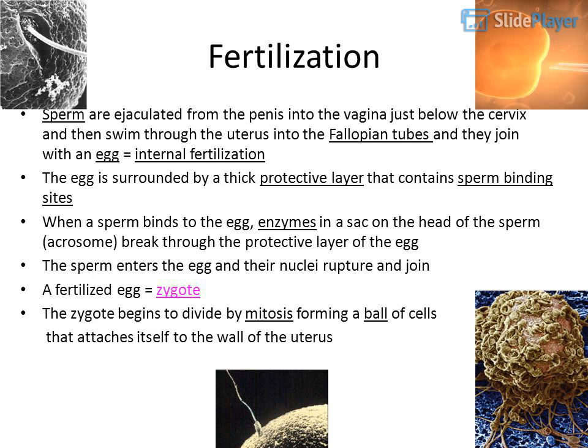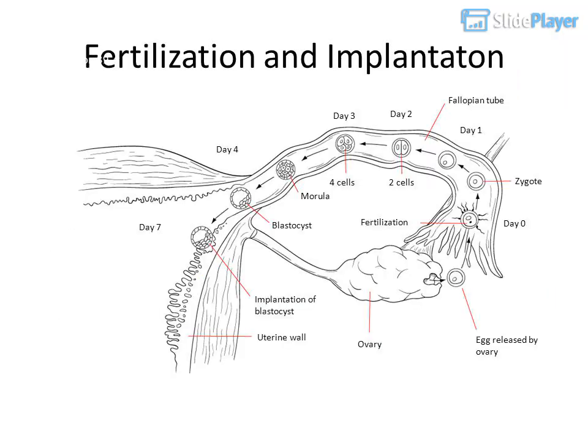A fertilized egg is called a zygote. The zygote begins to divide by mitosis, forming a ball of cells that attaches itself to the wall of the uterus — this process is fertilization and implantation.